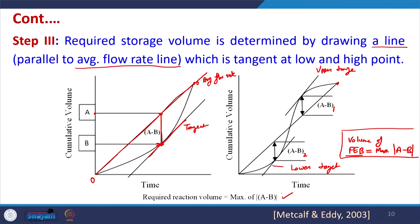We have now come to the end of flow equalization basin. We will start with other things in the next unit, and we will try to solve one actual numerical question before further understanding other types of treatment units. The required equalization basin volume is the maximum of |a - b|. Thank you very much.